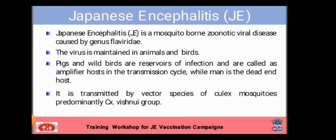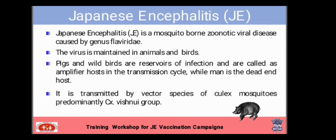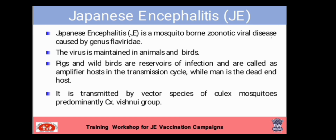Japanese Encephalitis is a mosquito-borne zoonotic viral disease caused by genus Flaviviridae. Mosquito-borne means the mosquito transmits this virus to human beings. Zoonotic means from animals — pigs and birds. The virus is maintained in animals; pigs and wild animals are reservoir of infection and are called amplifier hosts in the transmission cycle, while man is the dead end host. It is transmitted by vector species of the Culex vishnui group.